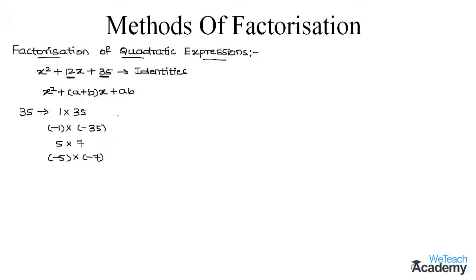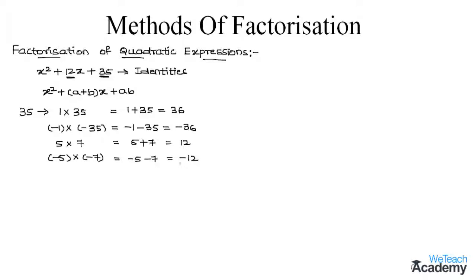Now find the sum of these factor pairs. Adding 35 and 1 gives 36. Adding −1 and −35 gives −36. Adding 5 and 7 gives 12, which is the coefficient of the middle term. So we select the pair 5 and 7, since 5 + 7 = 12.